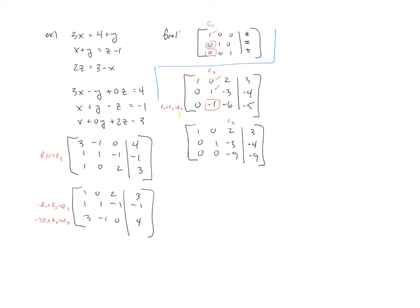On to column 3. We need to make this a 1. So I'll do a negative 1 9th row 3 to get a row 3. So once again, a lot of copying down. You want to go nice and slow to make sure you don't copy anything down incorrectly. It's very easy to do. And then if I run the negative 1 9th row, I'll get a 0, 0, 1, 1.